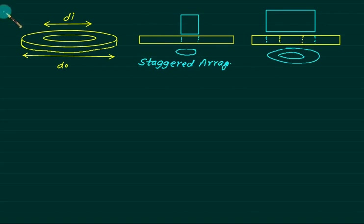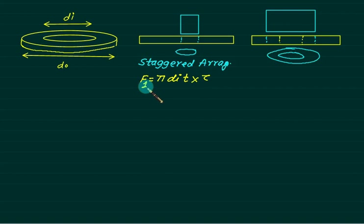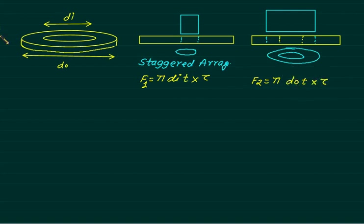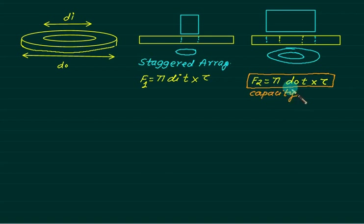In the staggered arrangement, only one operation is performed at a time. The force for the first stage is F1 = π·d_n·t·τ, and for the second stage F2 = π·d_0·t·τ. Since d_0 > d_n, F2 is the larger value. The machine capacity must be selected based on the maximum force, which is F2.